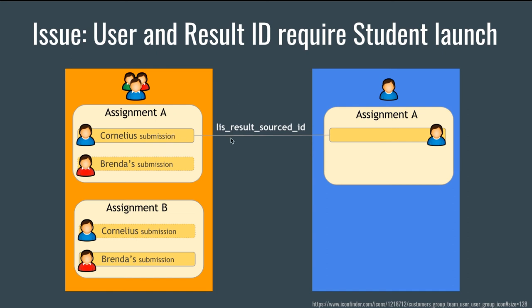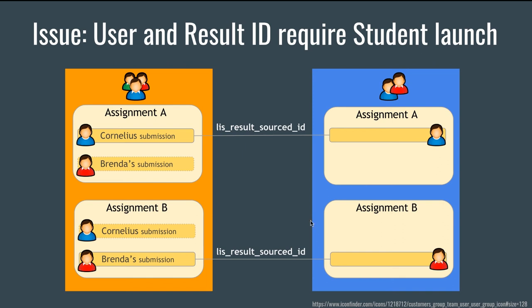Cornelius has launched, so the tool provider has the grade locator — the LIS result source ID — to allow posting back a grade for Cornelius. But there's no way to send a grade back to Brenda because it doesn't even know Brenda exists yet. Now Brenda launched a different assignment, so we discovered assignment B and can post a grade for Brenda — but only for assignment B. We cannot post a grade for Brenda in assignment A because we don't have the LIS result source ID that allows us to post a grade into the tool consumer gradebook.